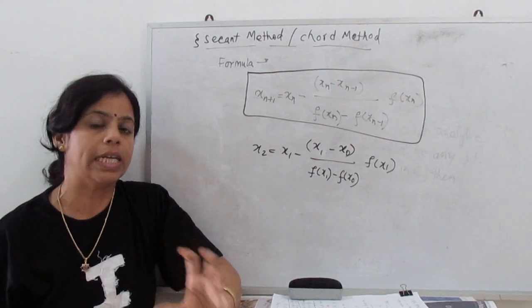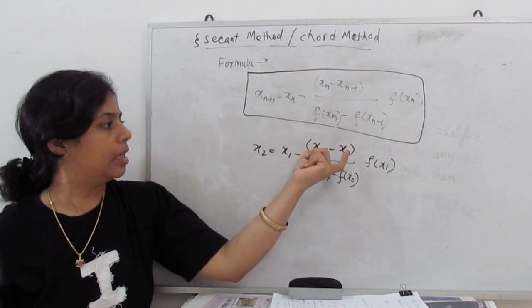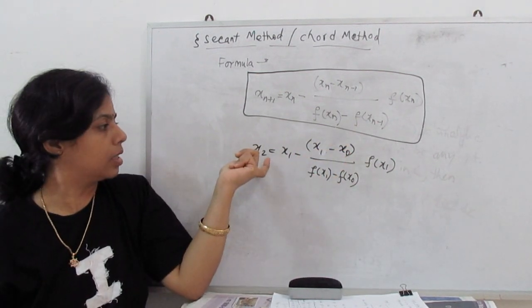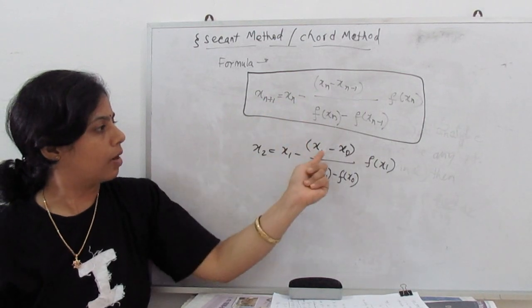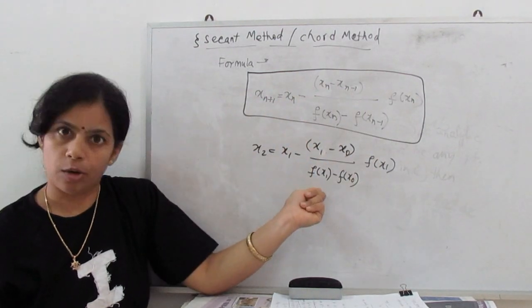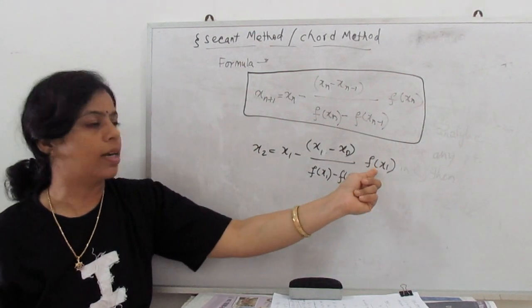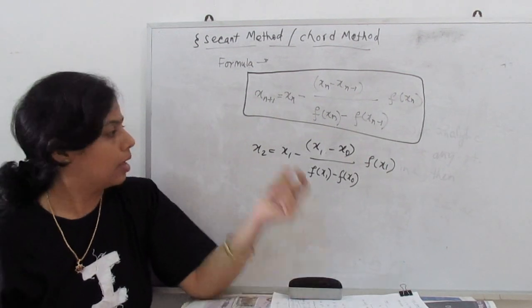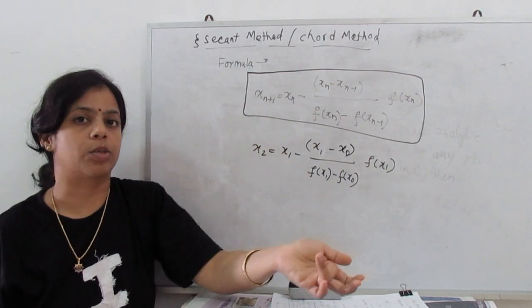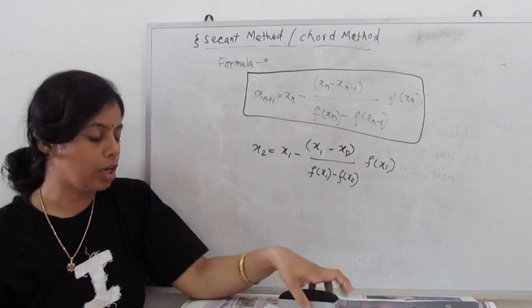With these two initial values, we start. First iteration: x_2 = x_1 - [(x_1 - x_0)/(f(x_1) - f(x_0))] × f(x_1). Similarly, for x_3 we use x_1 and x_2; for x_4 we use x_2 and x_3, and so on.